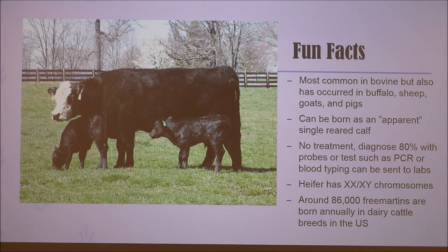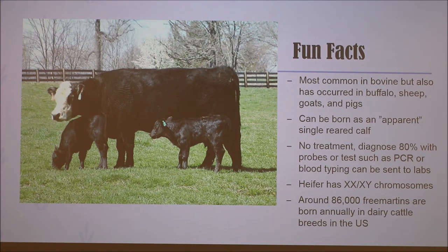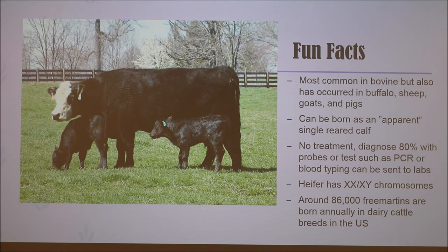Freemartinism is most common in bovine species, but it has also been reported in species such as buffalo, goats, sheep, and even pigs. Most freemartins are born twin, but there are some cases where a single-reared heifer calf can show freemart in characteristics. Usually in these cases, the co-twin male was likely died or aborted in utero.